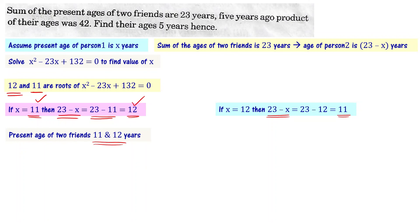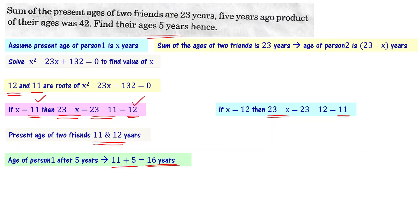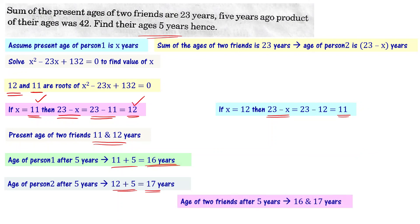Their ages after 5 years: person one's age will be 11 + 5 = 16 years, and person two's age will be 12 + 5 = 17 years. Therefore, after 5 years, the ages of the two friends will be 16 and 17 years. This is the answer we are looking for.